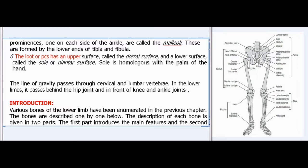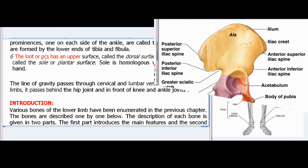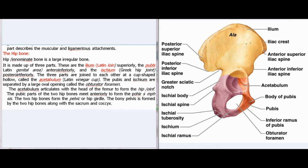The sole is homologous with the palm of the hand. The line of gravity passes through cervical and lumbar vertebrae; in the lower limbs it passes behind the hip joint and in front of the knee and ankle joints. Various bones of the lower limb are described one by one. The description of each bone is given in two parts: the first part introduces the main features and the second part describes the muscular and ligamentous attachments.